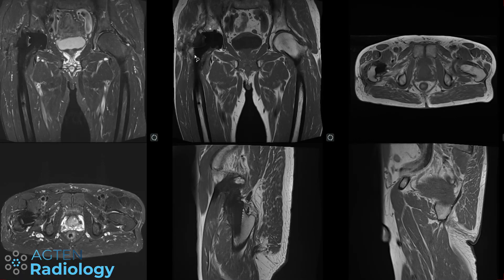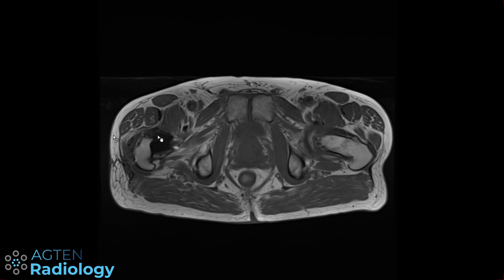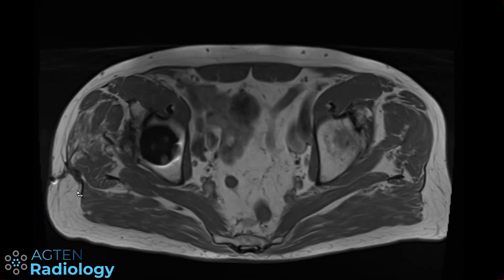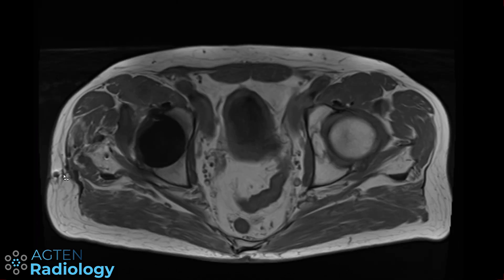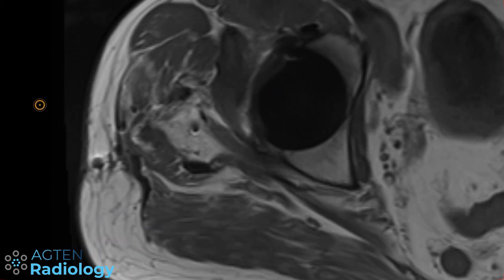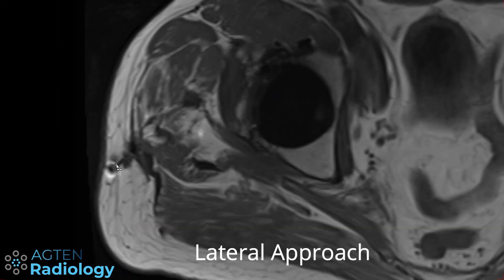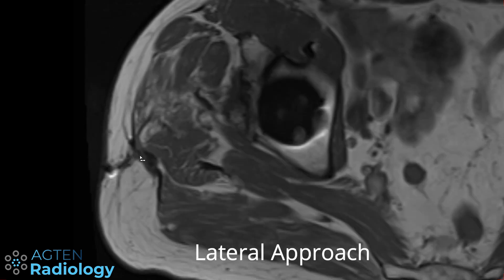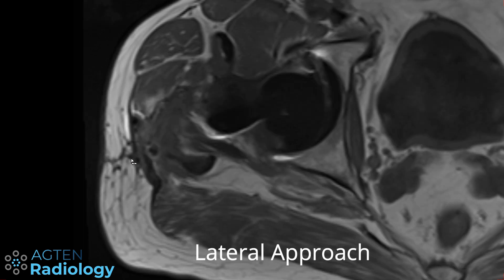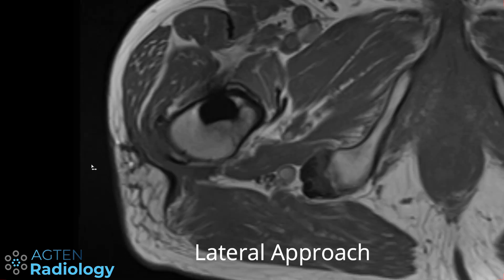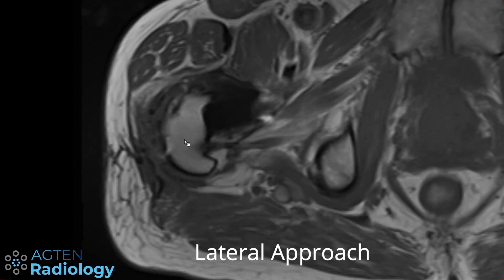To identify the surgical approach, the best strategy is to use the axials. As you scroll through, what you're looking for are these tiny little susceptibility artifacts. You can see the typical susceptibility artifacts here along the surgical approach, and you can immediately see that this surgical approach was a lateral approach.